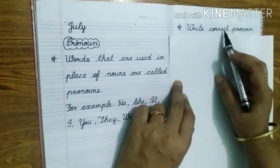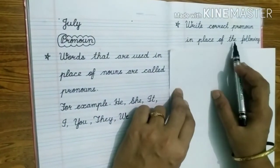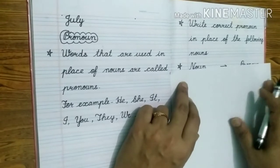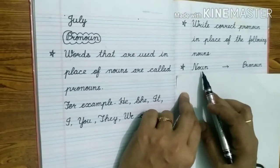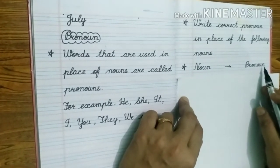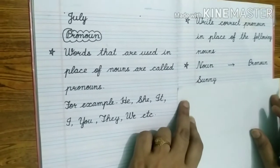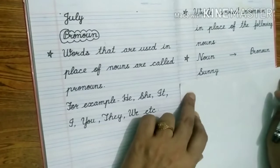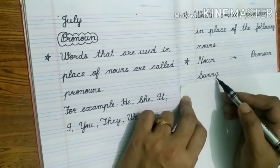Write the correct pronoun in place of the following nouns. On one side we will write the noun, and on the other side we will write the pronoun. After that we will do some examples. Like we have been given the name Sunny here.